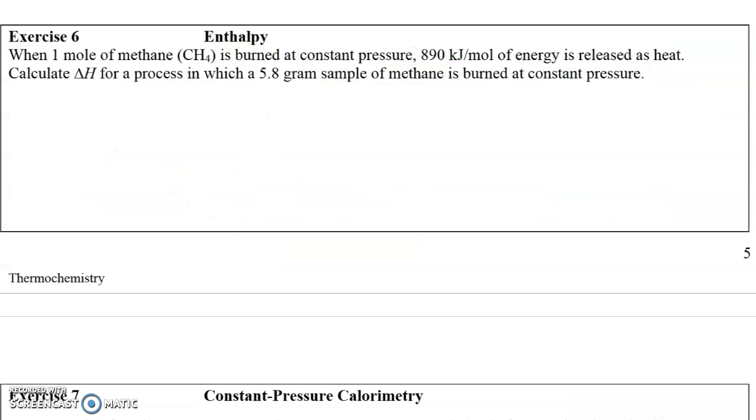Now this is an example where we're going back to that stoichiometry concept. So we have a mole of methane that we are burning at a constant pressure. So Q and delta H are essentially the same thing. We have an amount of energy that's released as heat, and we're trying to figure out the delta H for the entire process. In this particular case, we're starting out with only 5.8 grams of methane, not an entire mole. So it's going to be a stoichiometry problem where we start out with that as our given.